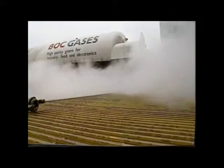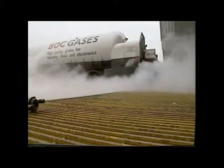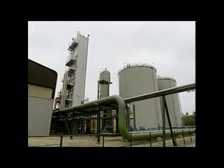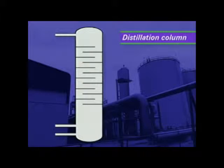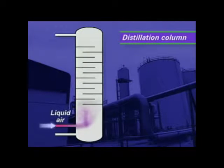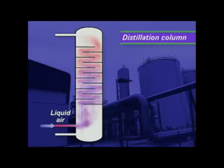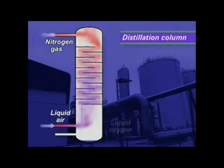Air, the raw material for this process, is everywhere and so plants are sited for the convenience of distributing the products. The principle of the process is straightforward. Air is cooled until it becomes liquid. Nitrogen has a lower boiling point than oxygen so it rises as a gas up the distillation column. Liquid oxygen collects at the bottom.